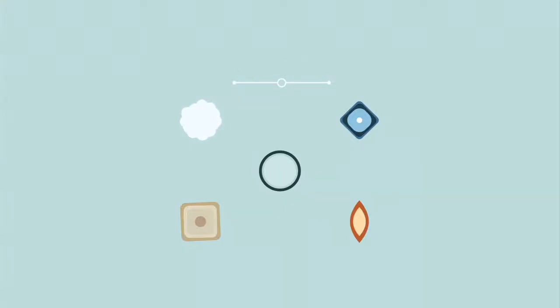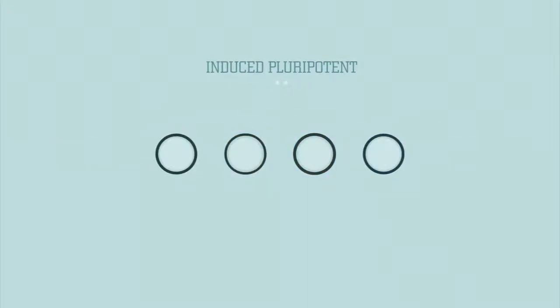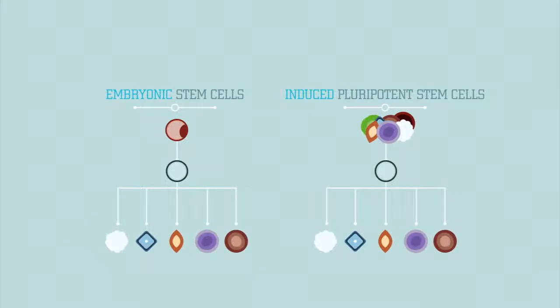A third kind of stem cells is called induced pluripotent stem cells. These are regular skin, fat, liver, or other cells that scientists have changed to behave like embryonic stem cells. Like embryonic stem cells, they too can become any kind of cell in the body.